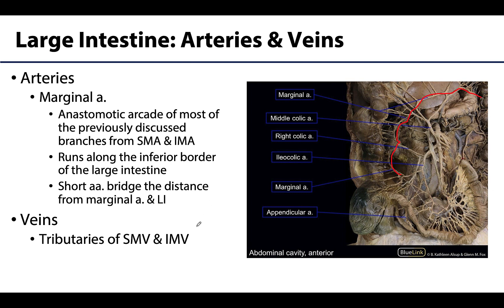Venous drainage of the large intestine includes tributaries of the superior and inferior mesenteric veins, both of which are part of the hepatic portal venous system.